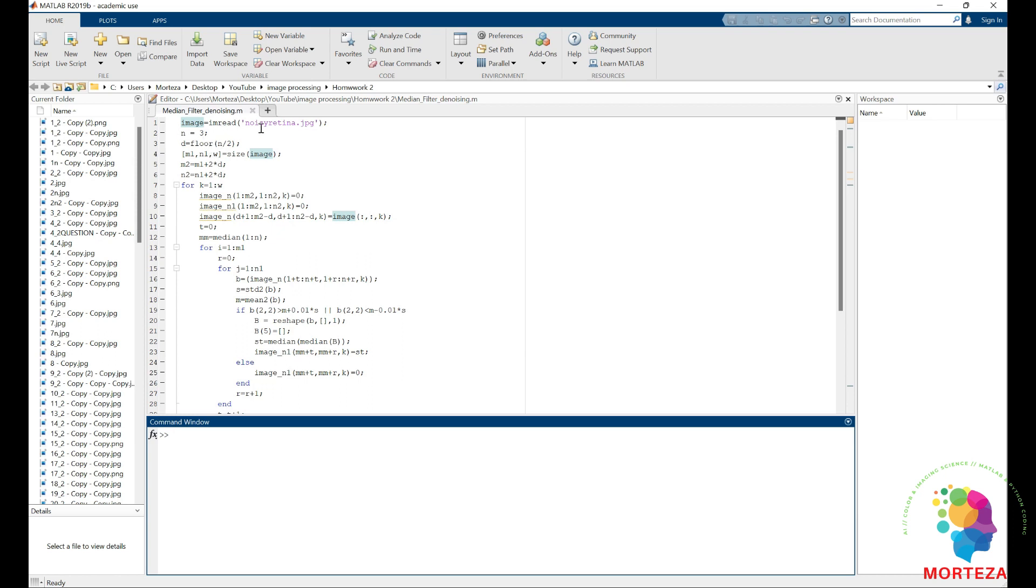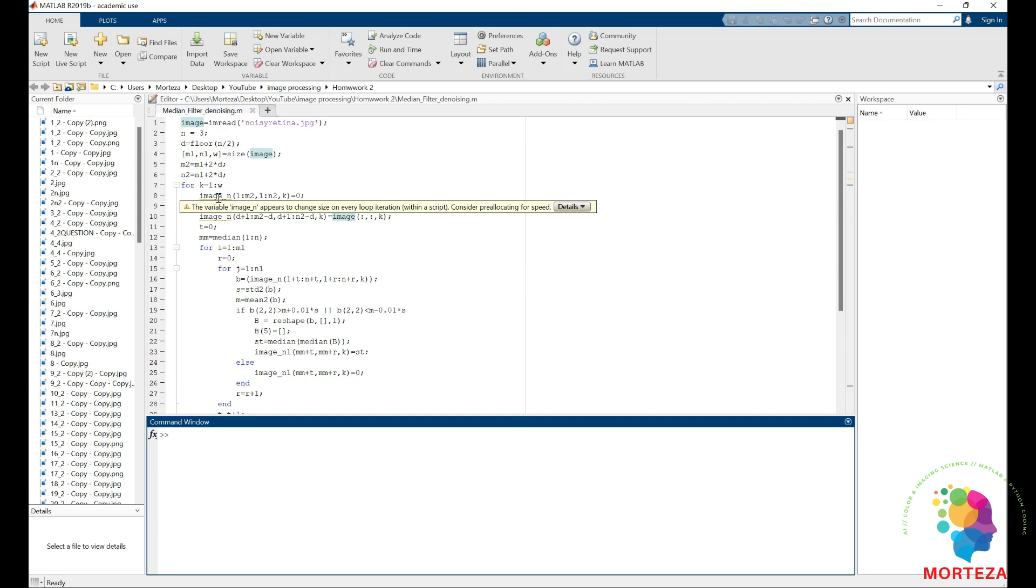So as you can see, first this is the image that is read in and I'm gonna use for loops through all the channels. And first I have image N that would contain my original image but it's bigger so that it could account for the corners in the image.